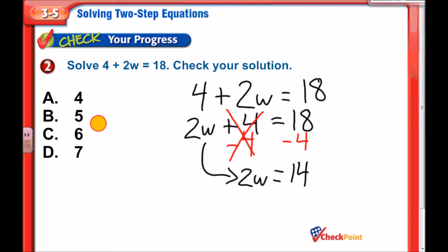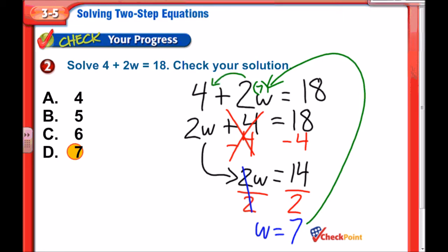Now we have to undo our multiplication. Divide by 2. Do the same thing to both sides. And it looks like our final answer, after we cancel out those 2s, would be w equals 7. That is an answer choice, but let's just make sure that works. If I put the 7 back in the original equation, 2 times 7 is 14, and 14 plus our 4 is 18. So yeah, that checks out. Worked out fine.